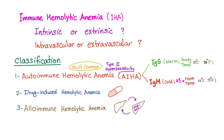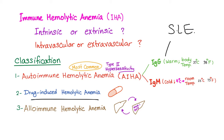Immune hemolytic anemia, as you know from previous videos, has three different causes. Autoimmune hemolytic anemia is by far the most common — we have the warm subtype and the cold subtype. Of the warm subtype, please don't forget lupus. Second most common is drug-induced hemolytic anemia, also known as drug-induced immune hemolytic anemia.